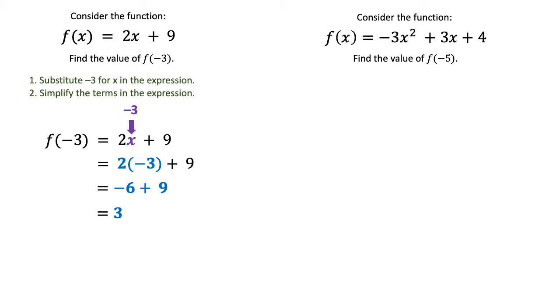Now let's look at the second function, f(x) equals -3x² plus 3x plus 4. And this time we want to find the value of -5. This one's a little bit more involved. You just have to make sure you watch what happens when you plug in that -5.